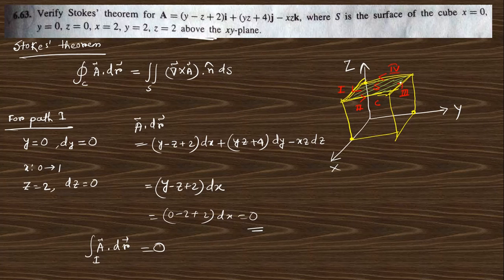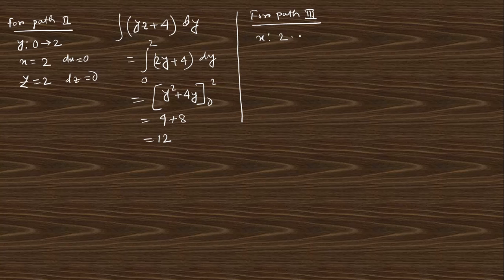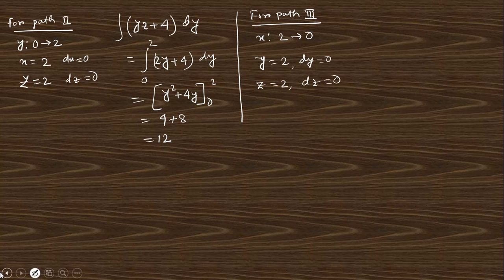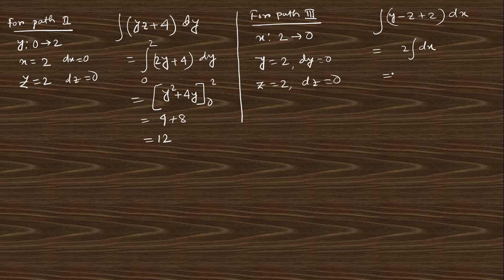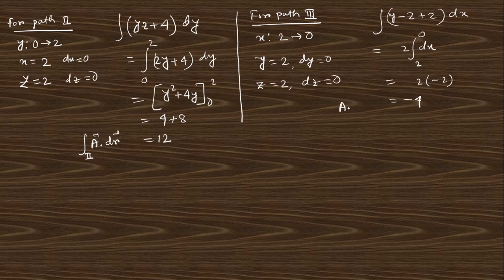For path 3: x changes from 2 to 0, y=2, z=2, so dy=0 and dz=0. Only the x-term remains: (y minus z plus 2)dx. Substituting y=2 and z=2 gives (2 minus 2 plus 2)dx = 2dx. Integrating x from 2 to 0 gives 2x evaluated from 2 to 0 = 2(0) minus 2(2) = minus 4. So path 3 gives minus 4.